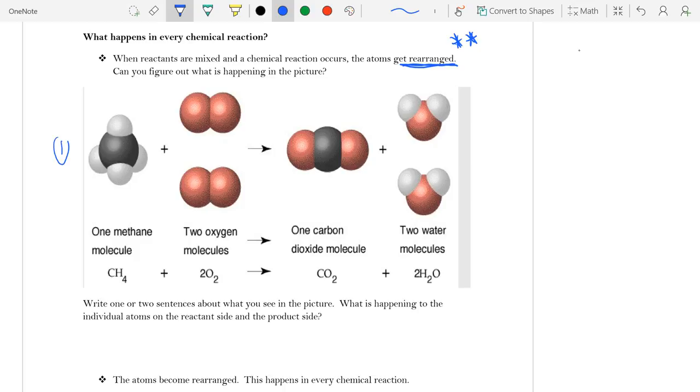Notice we have three different ways of representing this reaction. We have it with pictures with the different circles representing the atoms. We have it in words, and we also have it in symbols as the third one.